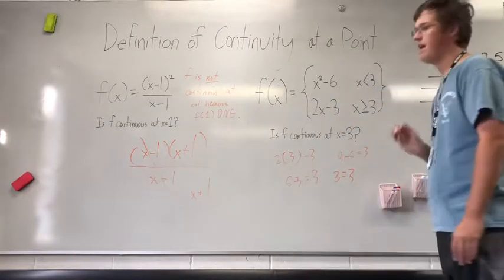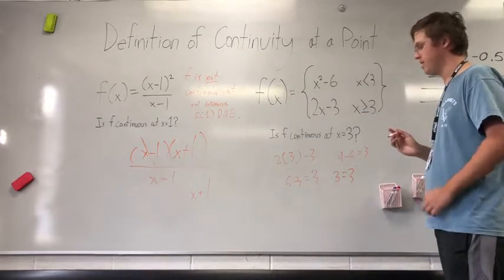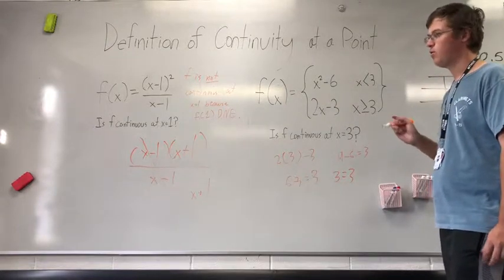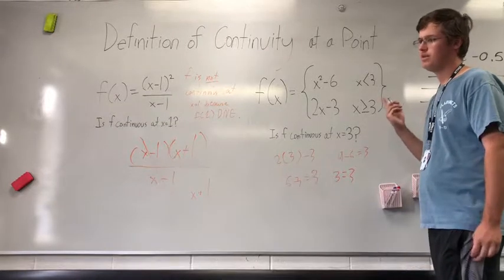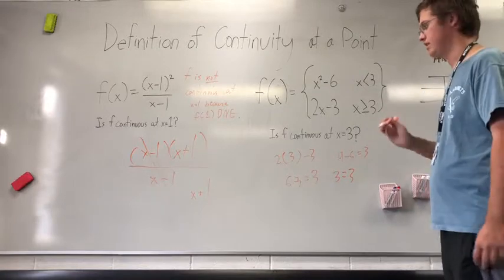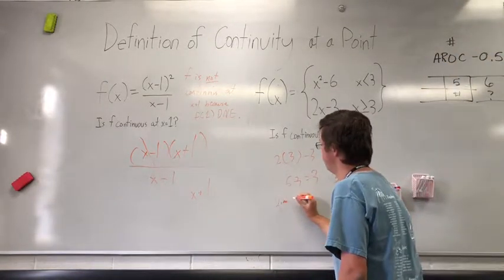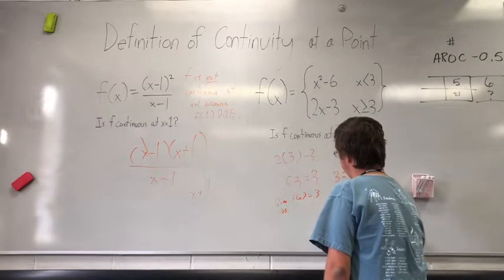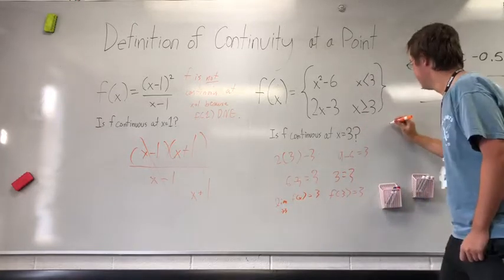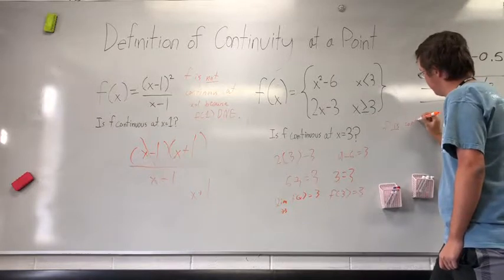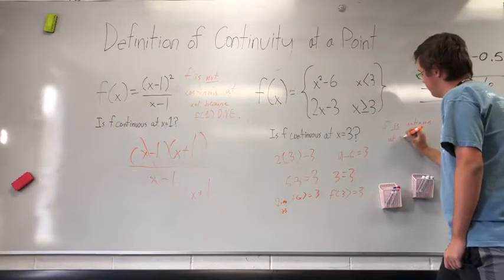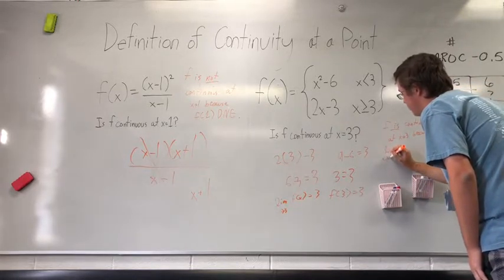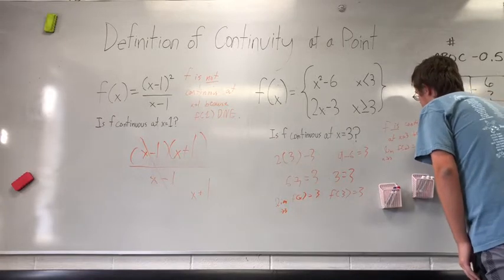So our defined point is f of 3 equals 3, the left-hand approach is 3, and the right-hand approach is 3. Therefore, since the approaches are the same, there is a limit that exists at x equals 3 — approaching the value of 3 — and there is a defined point at x equals 3, which is also y equals 3. So the limit as x approaches 3 of f(x) equals 3, and f of 3 equals 3. Therefore, f is continuous at x equals 3 because the limit as x approaches 3 of f(x) is equal to f of 3.